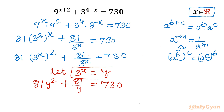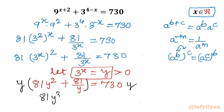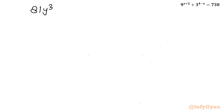As y is an exponential, y will always be greater than 0. I can multiply this equation with y on both sides since y is not 0. It will become 81y³ plus 81 equal to 730y, or we can write this cubic equation as 81y³ minus 730y plus 81 equal to 0.